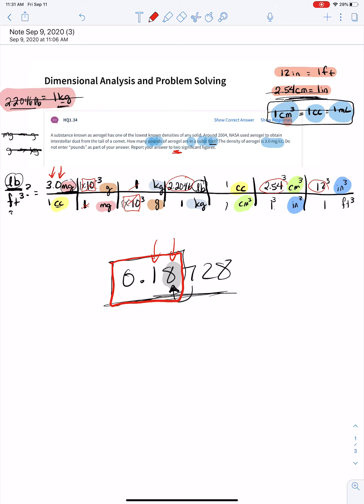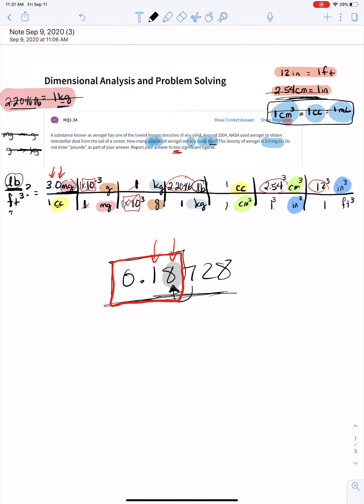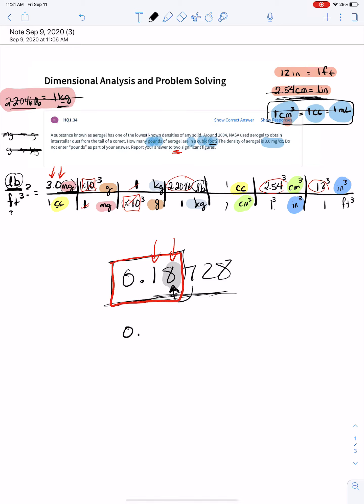Notice that my 7 rounds up, so it's 0.19 is the correct answer. Hope that helps. Don't forget your unit. Pounds per feet cubed.